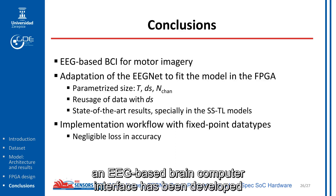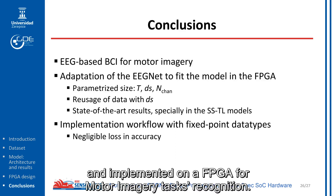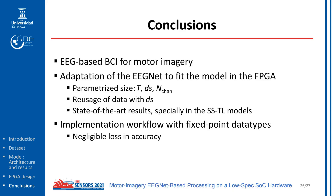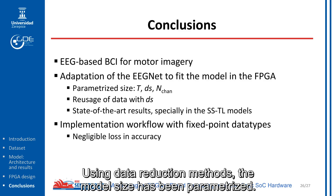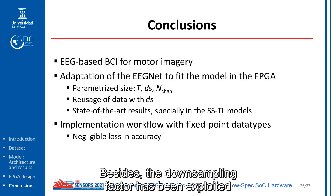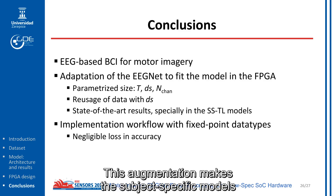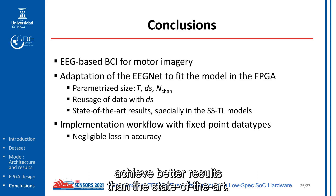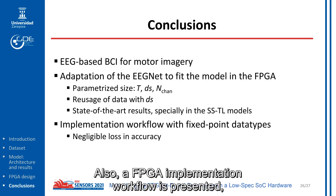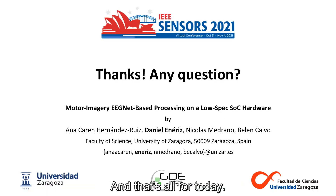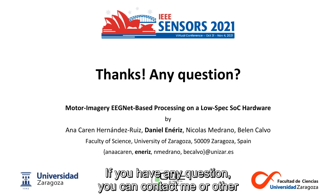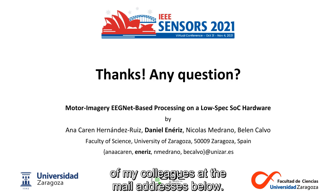In this work, an EEG-based brain-computer interface has been developed and implemented on an FPGA for motor imagery task recognition. It has been adapted from the EEGNet to work with the Physionet motor movement imagery dataset and fit into a low-spec FPGA. Using data reduction methods, the model size has been parameterized. Besides, the downsampling factor has been exploited to increase the number of trials in the dataset. This augmentation makes the subject-specific model achieve better results than the state of the art. Also, an FPGA implementation workflow is presented, taking advantage of fixed-point data types, which enables the implementation of this compact architecture in a low-spec FPGA with a negligible loss in accuracy. I hope this project was of your interest. If you have any questions, you can contact me or other colleagues at the email addresses shown.